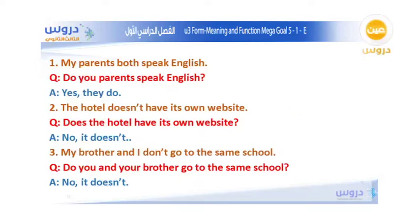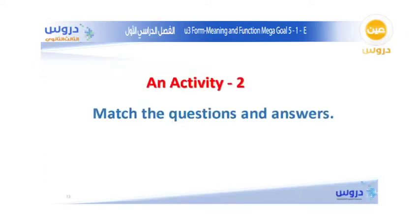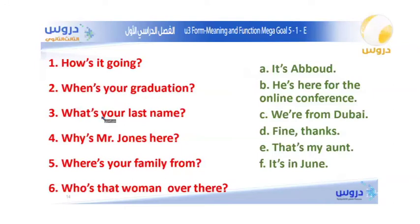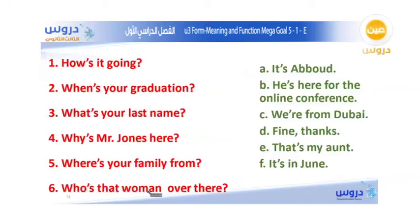So those are examples of how to make yes or no questions from statements in the simple present tense using do or does, depending on the subject. Now the second activity is to match the questions and answers. The questions are: How is it going? When is your graduation? What is your last name? Why is Mr. Jones here? Where is your family from? And who is that woman over there?